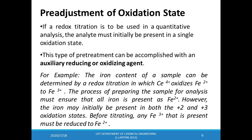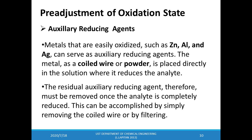In any redox titration, adjusting the oxidation states of the analyte can be accomplished by pretreatment using auxiliary reducing agents or auxiliary oxidizing agents. Auxiliary reducing agents ensure the analyte is in the reduced state. Usually a metal that is easy to oxidize, such as zinc, aluminum, and silver, can serve as an auxiliary reducing agent. Before the titration, the metal as a coiled wire or powder is added to the sample where it reduces the analyte. Any unreacted auxiliary reducing agent is then removed before titration by removing the coiled wire or by filtration.